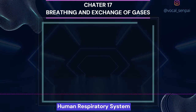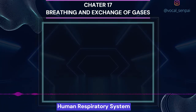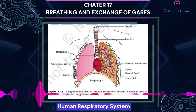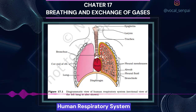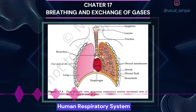Human Respiratory System: We have a pair of external nostrils opening out above the upper lips. It leads to a nasal chamber through the nasal passage. The nasal chamber opens into the pharynx, a portion of which is the common passage for food and air. The pharynx opens through the larynx region into the trachea. Larynx is a cartilaginous box which helps in sound production and hence called the sound box. During swallowing, the glottis can be covered by a thin elastic cartilaginous flap called epiglottis to prevent the entry of food into the larynx. Trachea is a straight tube extending up to the mid-thoracic cavity, which divides at the level of the fifth thoracic vertebra into a right and left primary bronchi. Each bronchus undergoes repeated divisions to form the secondary and tertiary bronchi and bronchioles, ending up in very thin terminal bronchioles.